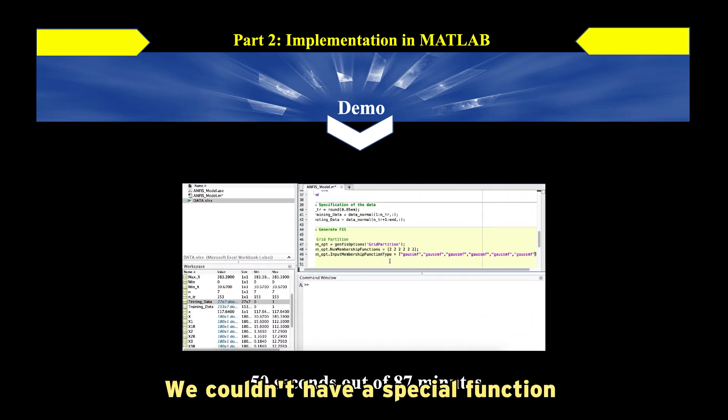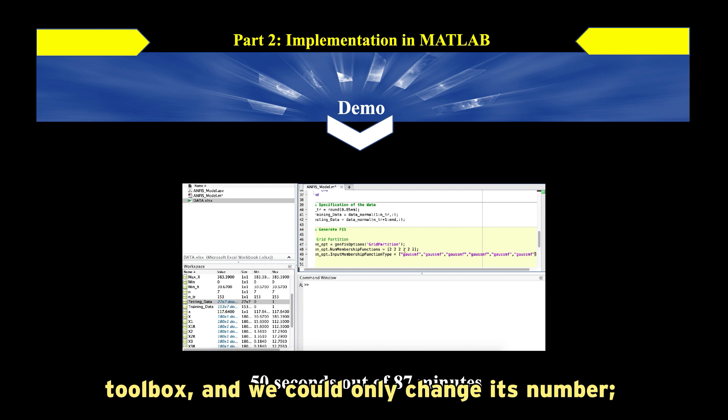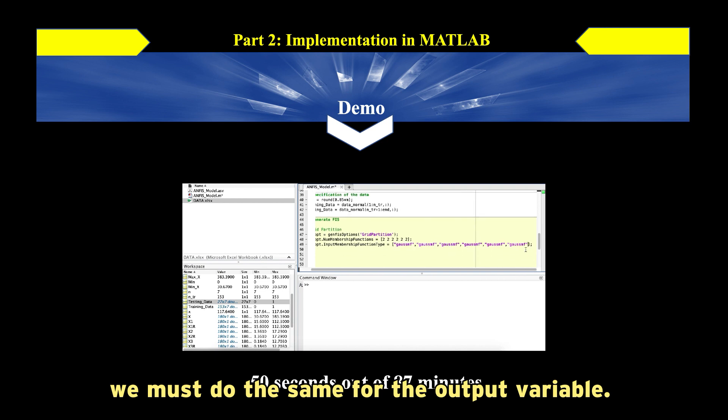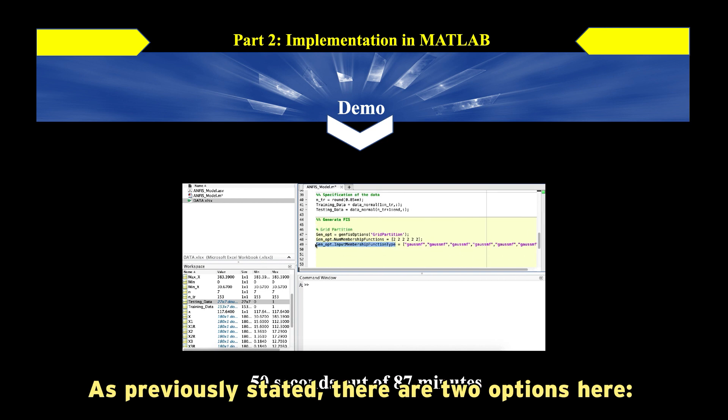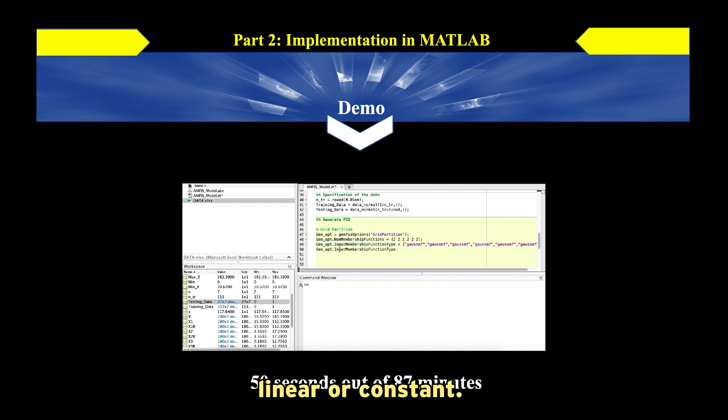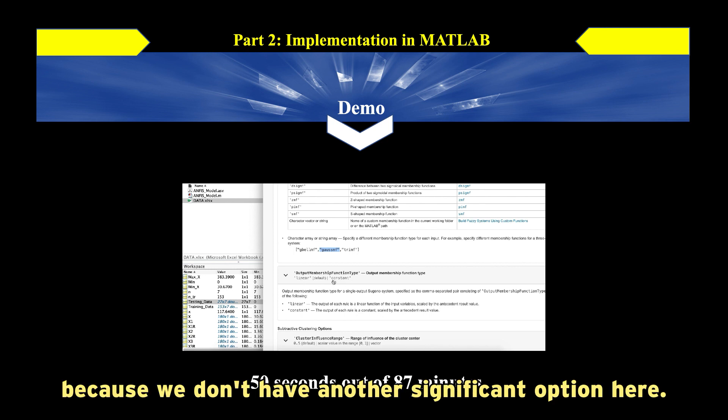We couldn't have a special function form for each variable in the previous part of the toolbox and we could only change its number. We must do the same for the output variable. As previously stated, there are two options here: linear or constant. I'd like to use the constant form in this section. We can also select linear or constant because we don't have another significant option here.